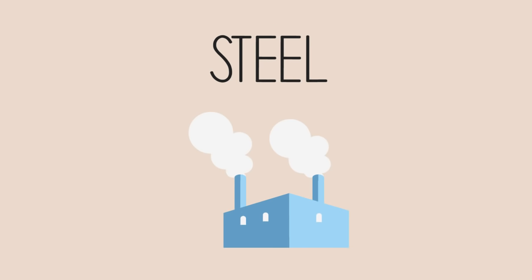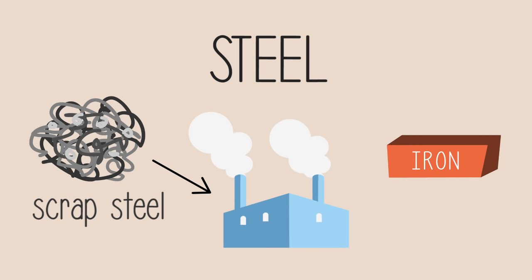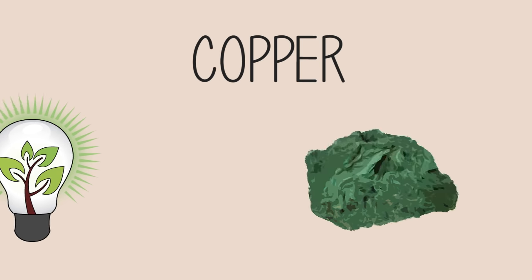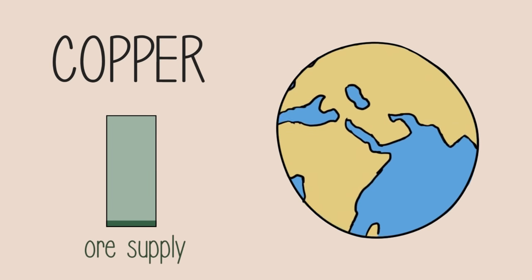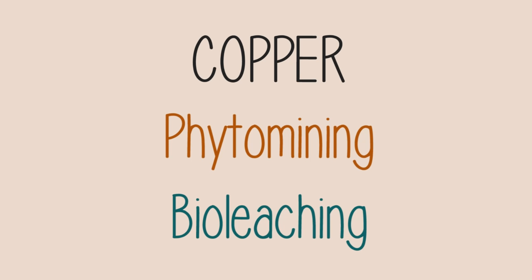Steel can be recycled, and most steel mills primarily use recycled scrap steel instead of cast or pig iron from blast furnaces. Copper is also recycled. Once again, this is a more energy-efficient process than the extraction from its ore. As well, the copper ore supply on Earth is being depleted at a very fast rate. As a result, other methods for the extraction of copper, such as phytomining and bioleaching, are being used instead.